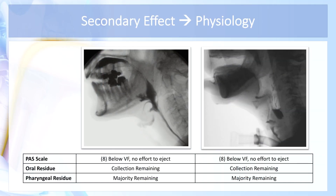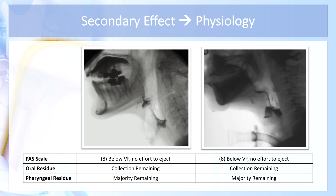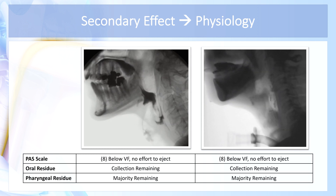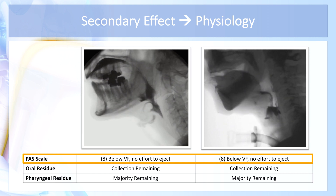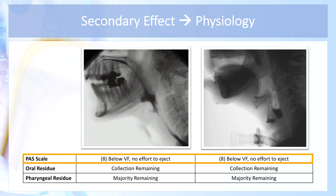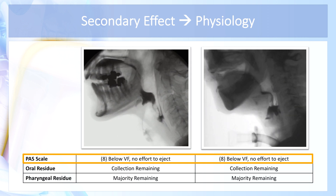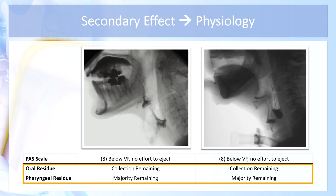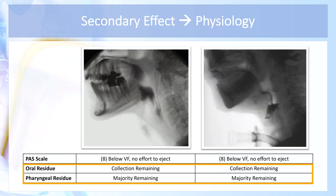Here's an example of applying just one aspect of swallowing function: airway protection. This shows penetration aspiration and residue displayed in two different patients with the same penetration aspiration scale score and similar oropharyngeal residue. Both patients on the left and right have the same score — they are an eight — meaning material enters below the vocal folds with no effort to eject the bolus, and there is a majority of the bolus contained in the pharyngeal recesses after the initial swallow.